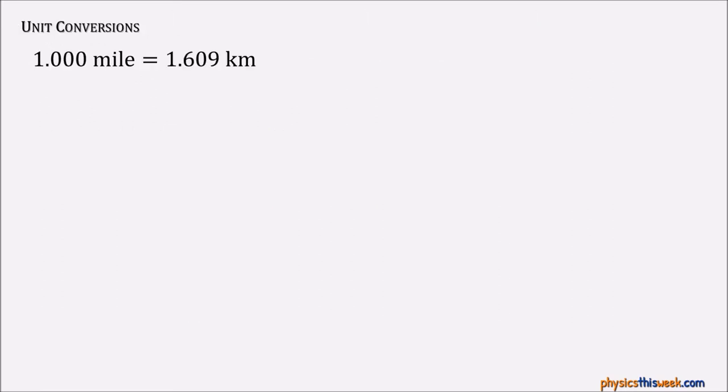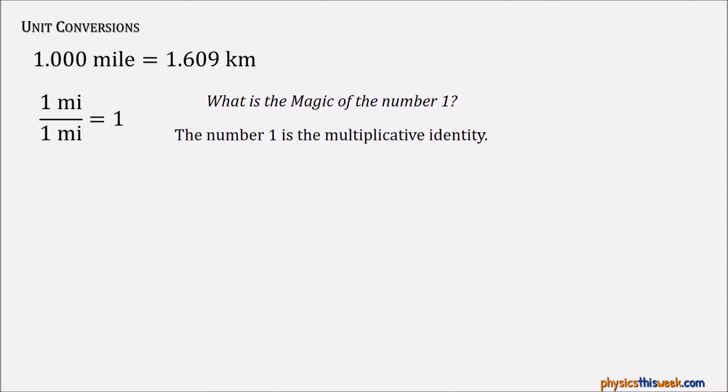So this is a typical conversion factor where you have one length related to another length. Because these things are equal, both sides are the same, the numbers are different, but the unit makes sure we know which one we're talking about. If we take one mile and divide it by one mile, of course we get the number one. Some textbooks talk about the magic of number one. It's not really magic. The number one is actually the multiplicative identity. That means if you take one times a number, you get that number back. Multiplying by one doesn't change the value, it might change the way it looks.